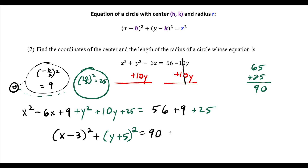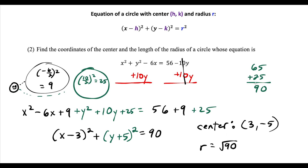The radius is being squared, so we identify that 90 is the square of radical 90. The center: take the opposite of the factor terms — opposite of minus 3 is positive 3, opposite of plus 5 is minus 5. So the center is (3, -5) and the radius equals the square root of 90. In simplified form, the square root of 90 equals the square root of 9 times the square root of 10, which is 3 radical 10.